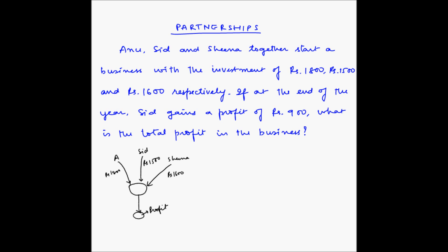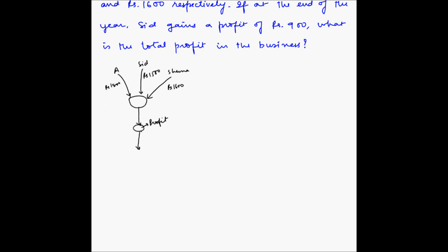Now we have been given that Sid's share of profit is rupees 900. We don't know what Anu has, we don't know what Sheena has and now with this information, we have to find out what is this profit.